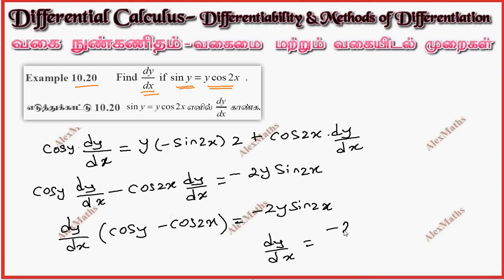Now dy by dx, if you take the entire term to the other side, so minus 2y sin 2x whole divided by cos y minus cos 2x.